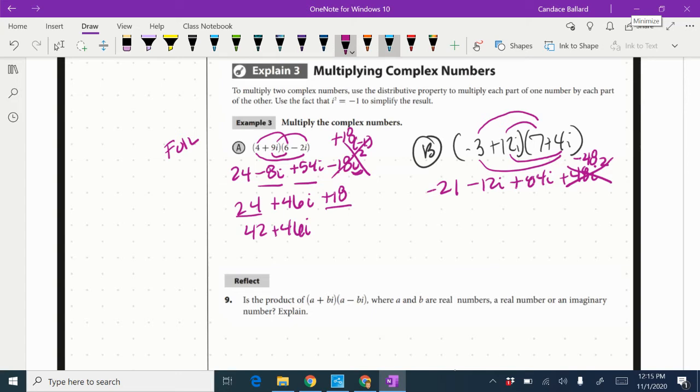Now I've got it down to two lines where I can just combine like terms in this line. So negative 21 and negative 48 is negative 69. And negative 12i and positive 84i is positive 72i.